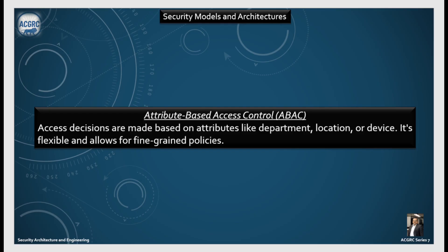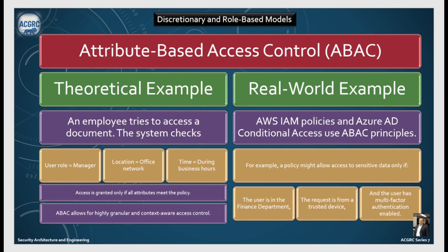In Attribute-Based Access Control (ABAC), access decisions are made based on attributes like department, location or device. It's flexible and allows for fine-grained policies. For example, when an employee tries to access a document, the system checks whether the user's role is manager, what the location is, and what the time is. Access is granted only if all attributes meet the policy. ABAC allows for highly granular and context-aware access control.